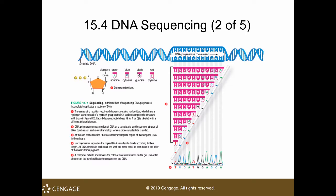The DNA migrates from the negative side to the positive side, and when it does, the fragments migrate at different rates based on their sizes. Smaller fragments migrate first. So you can determine the first letter, or rather the complement of the first letter of the sequence you are trying to read, as shown in the diagram.